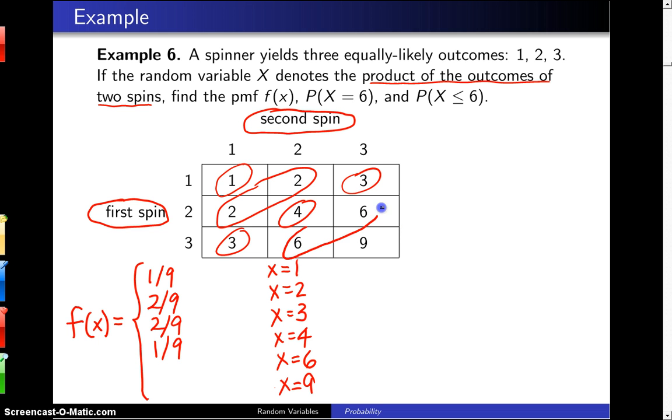The probability that the product is a 6, which can be done by getting a 3 on the first spin and a 2 on the second spin or a 2 on the first spin and a 3 on the second spin, is again 2 ninths. And finally, the probability of getting a 9 for the product is 1 ninth.